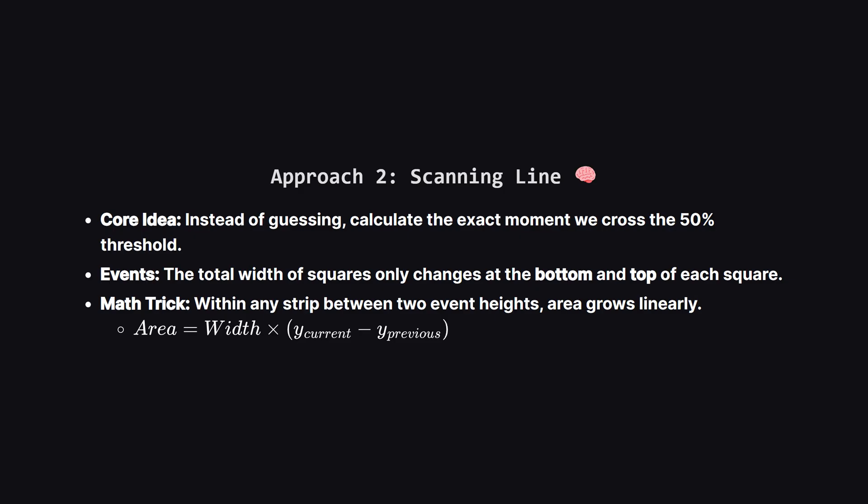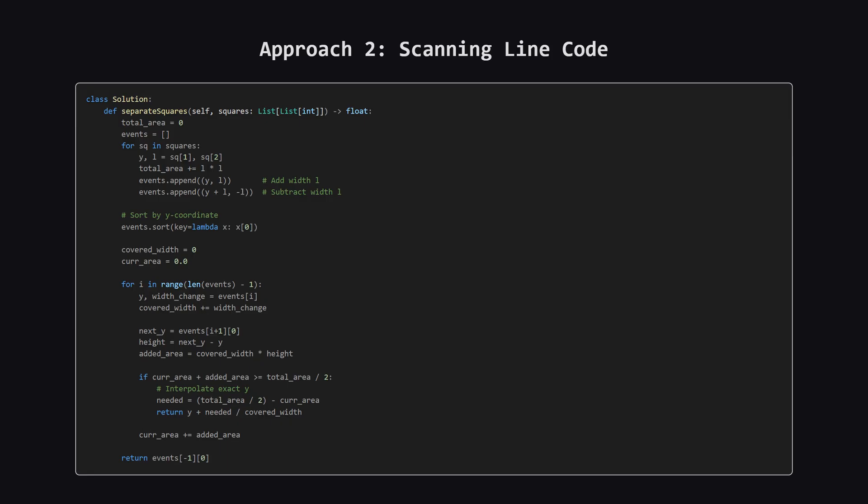Now let's talk about the second approach — the sweep line method. This is often faster because it doesn't involve guessing. Instead, we scan from bottom to top. We treat the bottom and top edges of every square as events. Between any two events, the total width of all active squares is constant, meaning the area grows linearly in that strip. We just keep adding up these rectangular strips until we pass the halfway mark for total area. Here is the code for the sweep line approach — it's a bit more mathematical, but very powerful. We create a list of events where the width changes, sort them, and then iterate through.